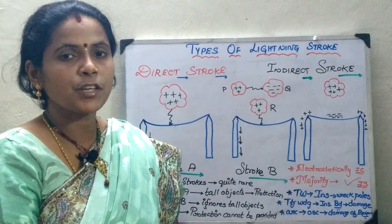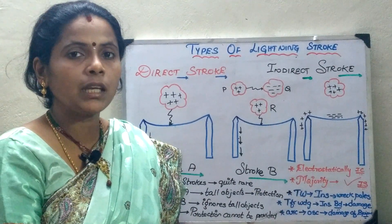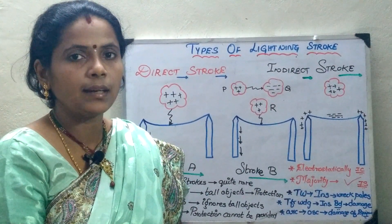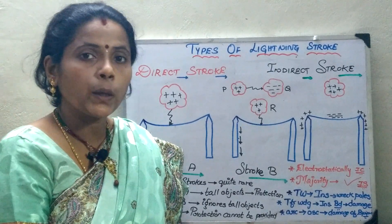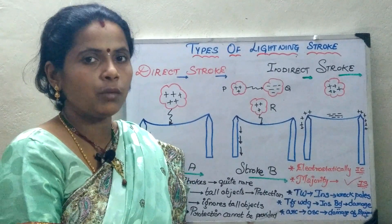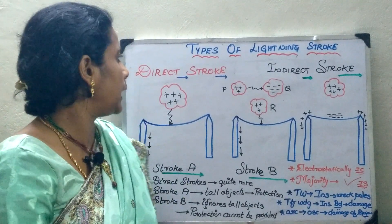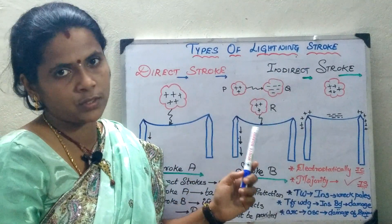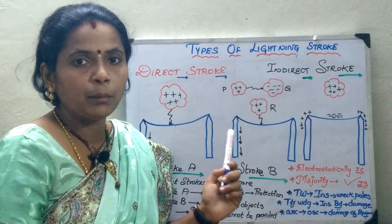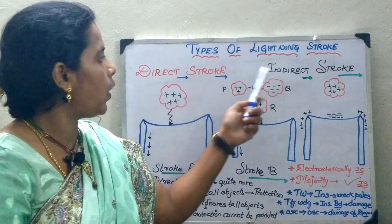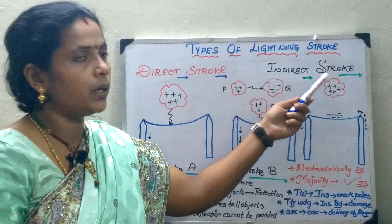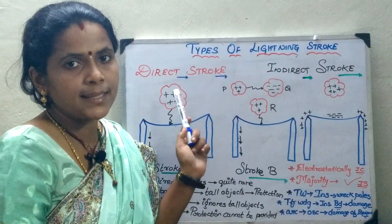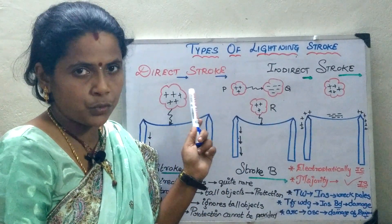In the earlier session we have seen about the mechanism of the lightning discharge. In this session we will be seeing about the types of lightning strokes. It can be either the direct stroke or it can be the indirect stroke. First we will analyze the direct stroke.